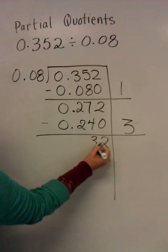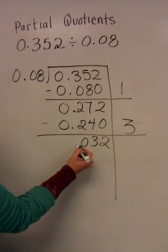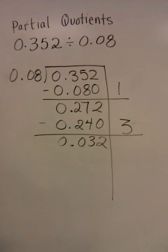I go ahead and subtract again and I end up with 32 thousandths.